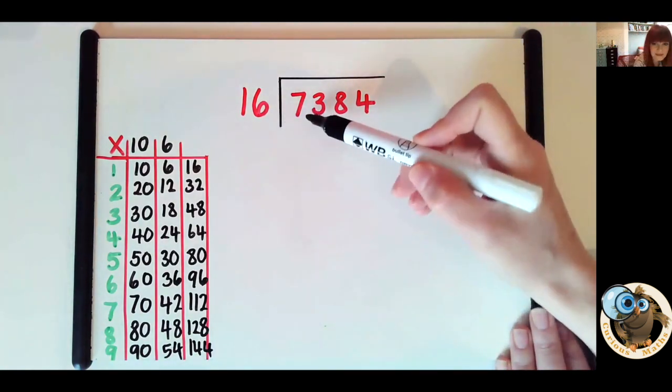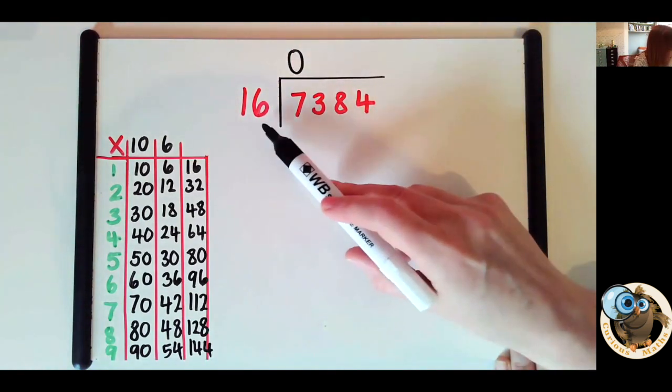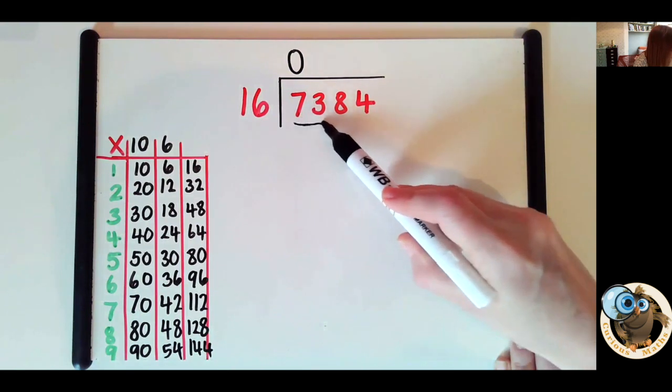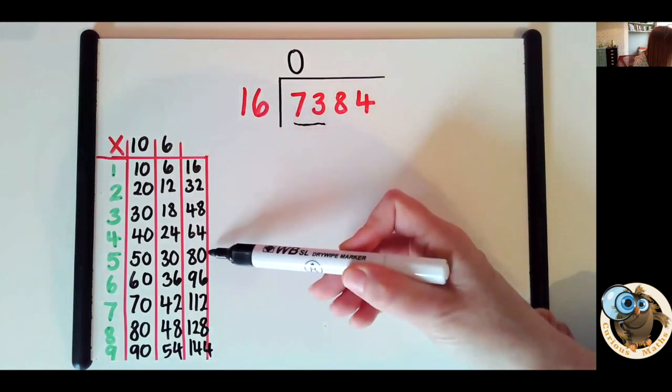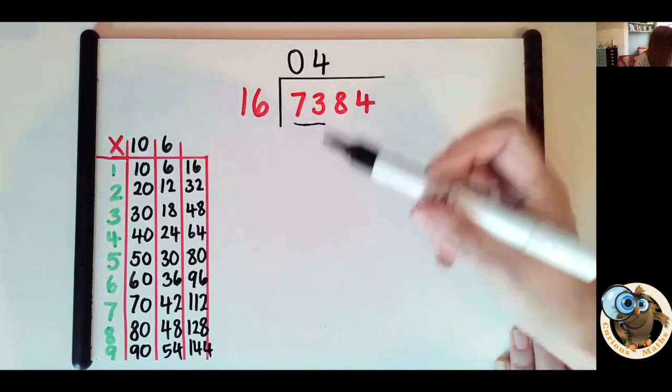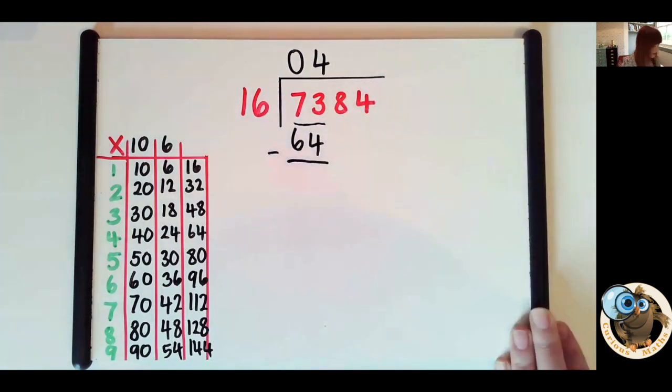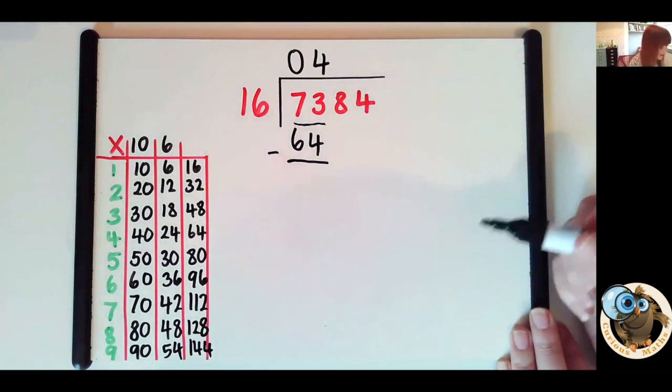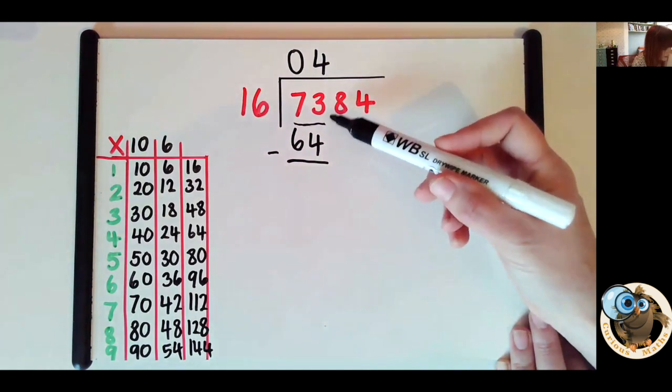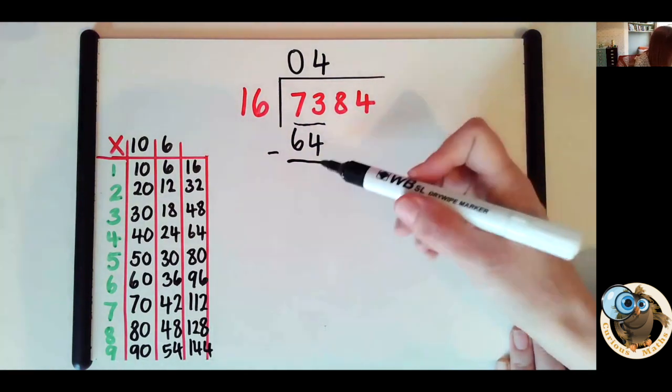So how many 16s in 7? Zero. So we look at the next digit, we put them together. How many 16s in 73? So we can use our chart, we don't need to stop to do a short multiplication. And we can see that five 16s are 80, which is too many. So it must be four 16s. And four 16s are 64. And we take that away. And we can either use a column subtraction method or encourage your child to look at it and calculate mentally. I know that the difference between 64 and 74 is 10, so the difference between 64 and 73 must be 9.